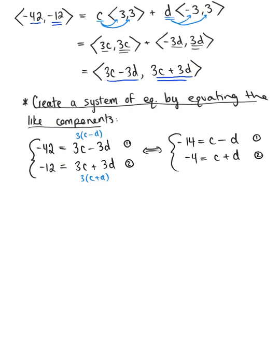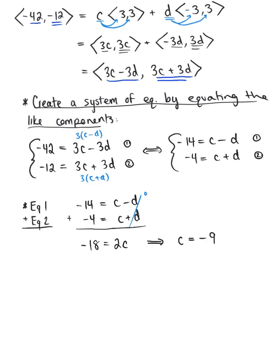You can use substitution or elimination to solve this system. So I'm going to use elimination here. I'm simply going to take equation 1 and I'm going to add it to equation 2. So we can even think about this as an equation itself. I have minus 14 is equal to c minus d plus negative 4 is equal to c plus d. And when we add these together, notice that the d variables cancel each other out to 0, leaving us with negative 18 is equal to 2c. And solving for c here, if we divide both sides by 2, we can see that our scalar c is equal to negative 9.